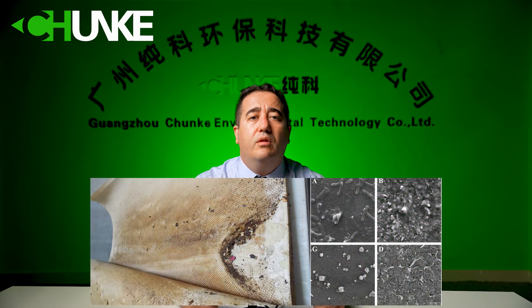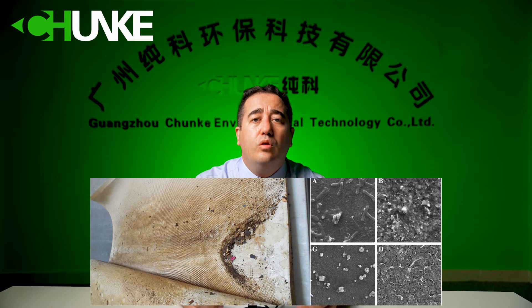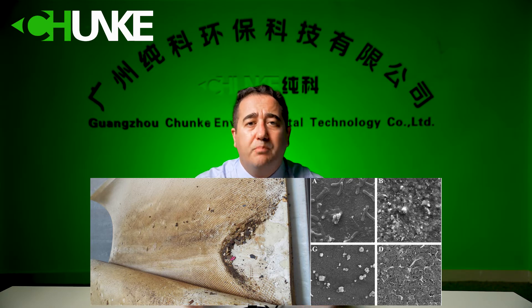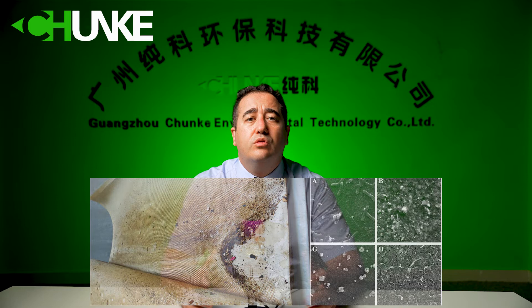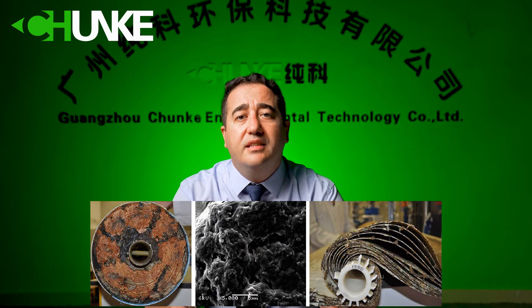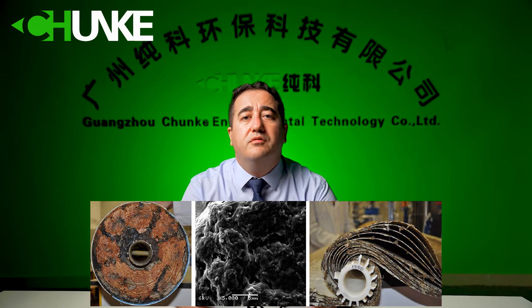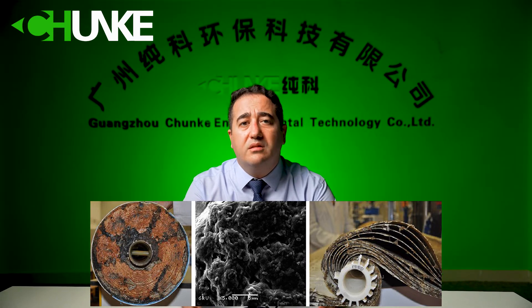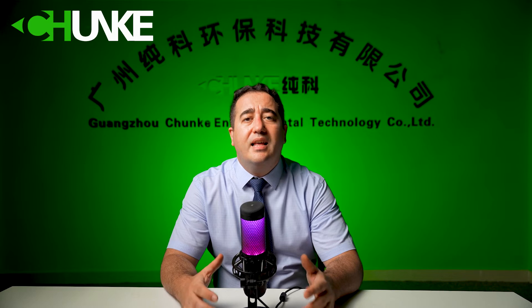Colloidal fouling occurs when suspended solids or colloidal material close the holes of a membrane or stick to its surface. As particles accumulate on the membrane, they form a cake layer that obstructs water from flowing through the membrane pores, resulting in increased pressure differential and increased energy consumption. Organic fouling is the combination of deposition, reactions, and interactions of high molecular weight organic molecules — for example, natural organic matter — with the membrane surface. These organic matters usually consist of humic substances, polysaccharides, proteins, lipids, nucleic acids, amino acids, organic acids, and cell components.